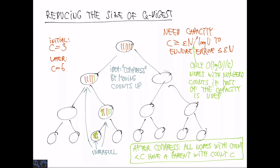And this may empty some nodes and save us space. So the invariant after the compress is that all nodes that have a non-zero count less than C have a parent with count C. And this means that the total number of nodes with non-zero counts is going to be O of N over C as we want it to.